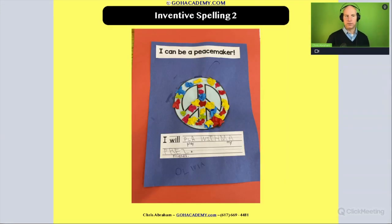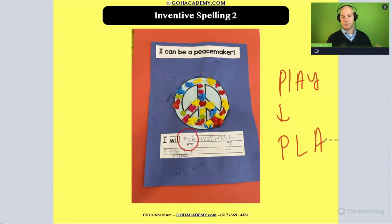Here's another one here. It says here, I can be a peacemaker. And then the child writes, I will play with my friends. And here again, we have that word play, right? They want to write the word play. They do their best job to match up the sounds they hear in play with P, L, A. This is a wonderful example of inventive spelling.